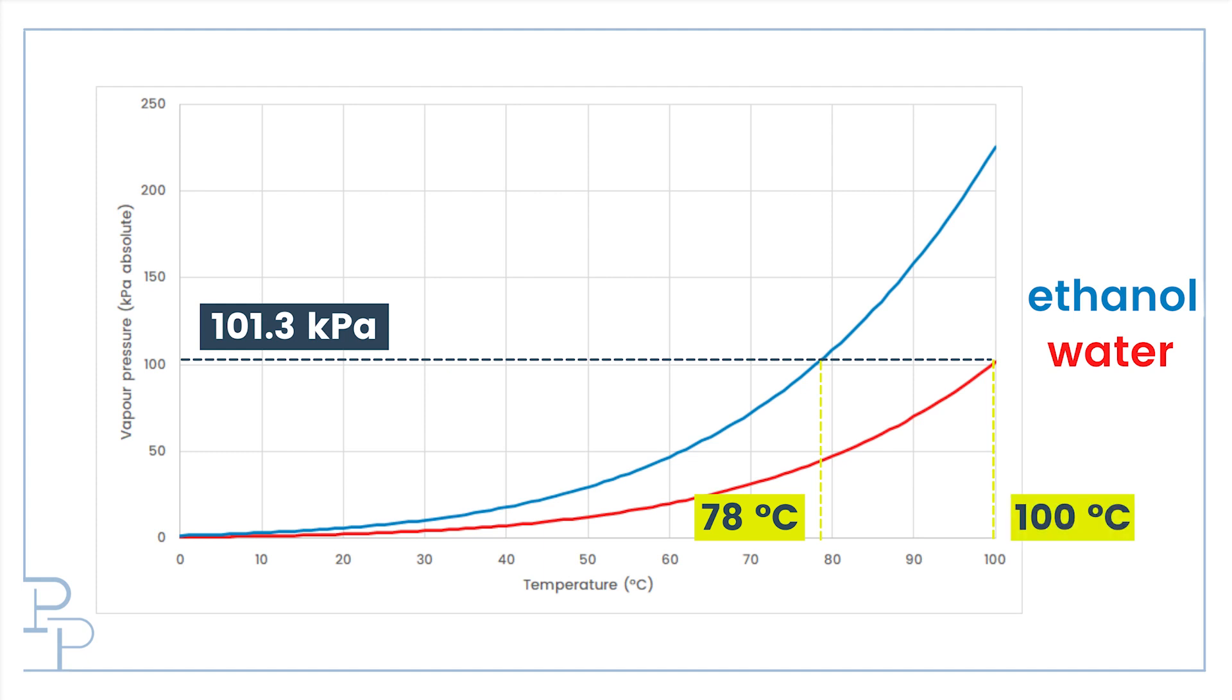Lo and behold, these are the boiling points of our two liquids. From this, it should be clear why we say that more volatile substances, those with higher vapor pressures, have lower boiling points.